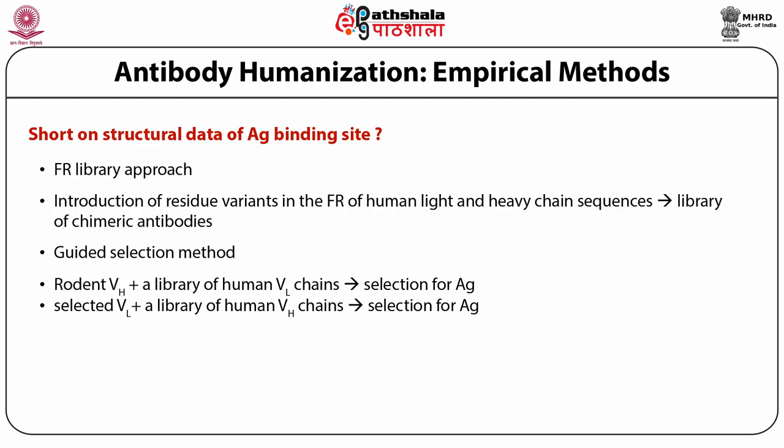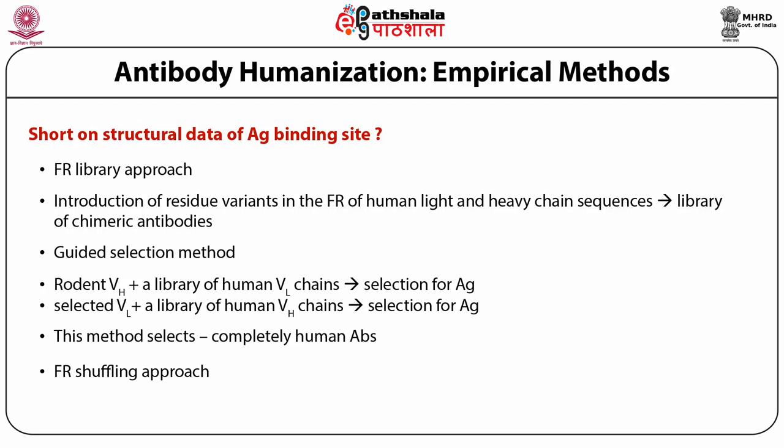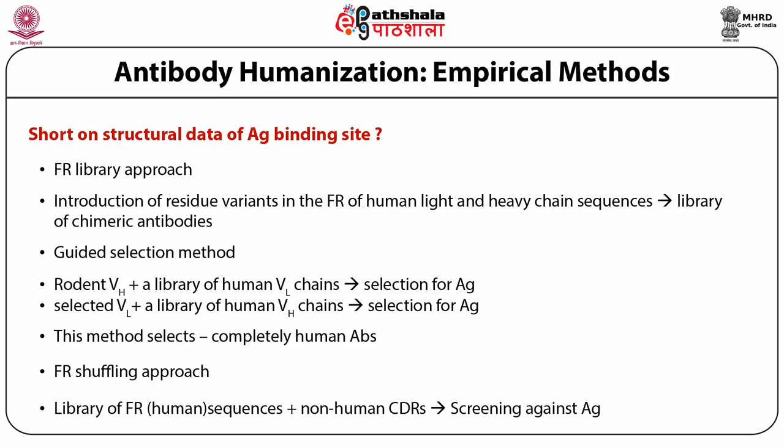The FR shuffling approach has a slight difference from the FR library approach: in FR shuffling, the complete FR of human sequences in the form of a library is fused with the non-human CDRs. The framework region of human antibodies of germline origin is combined with the non-human CDRs, producing a library that is screened against the antigen for binding. Clones showing high antigen binding from such a library are selected for further application.